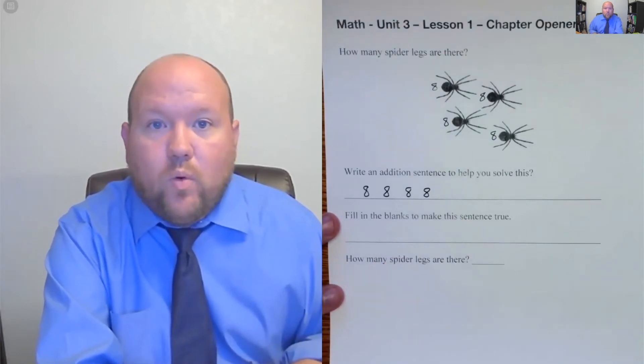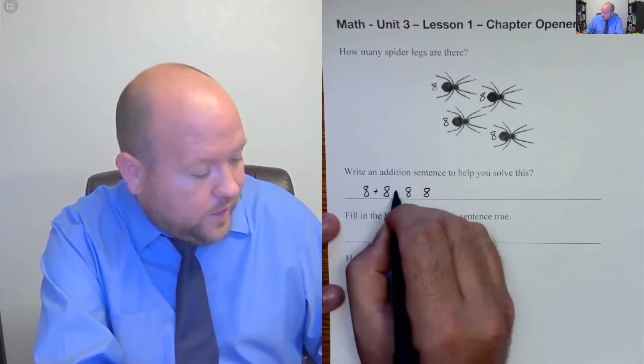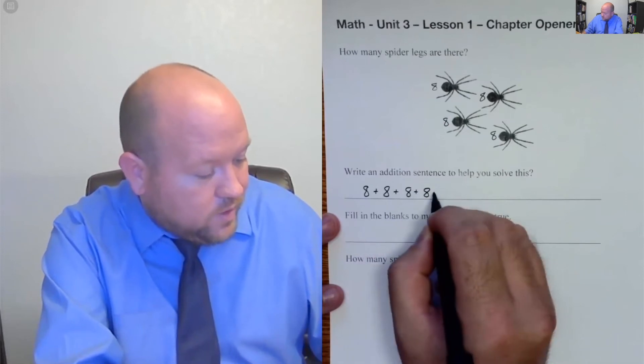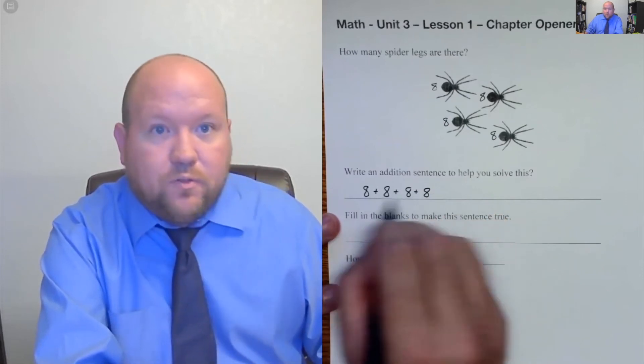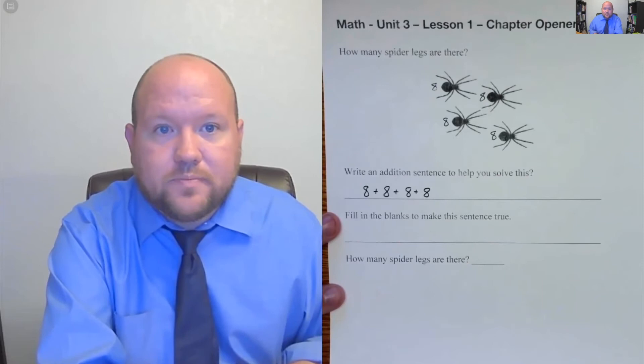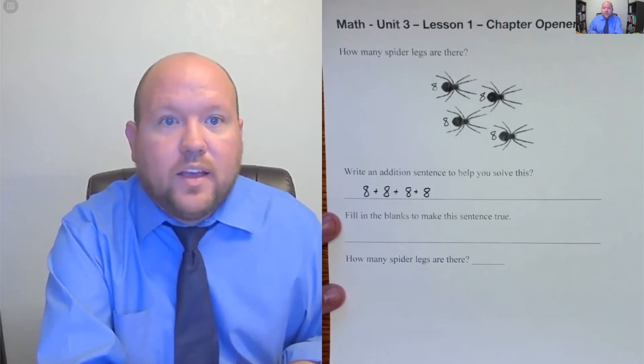So if we wanted to solve this, we would say eight plus eight plus eight plus eight. So four eights all added together.